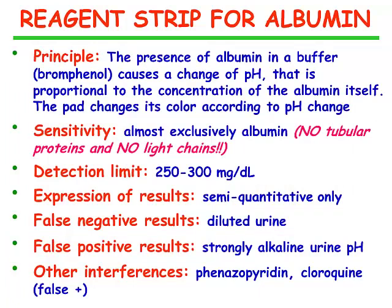What about the reagent strip for albumin? The presence of albumin in a buffer — in this case bromophenol — causes a change of pH that is proportional to the concentration of the albumin itself. According to the change in pH, there is a change in color. This dipstick is almost exclusively sensitive to albumin; it doesn't detect tubular proteins or light chains. Detection limit varies from 250 to 300 mg per deciliter, which changes according to the brand of the dipstick. The results are only semi-quantitative. False negative results are seen if the urine is diluted, while false positives occur if the urine is strongly alkaline or contains drugs such as phenazopyridine or chloroquine.